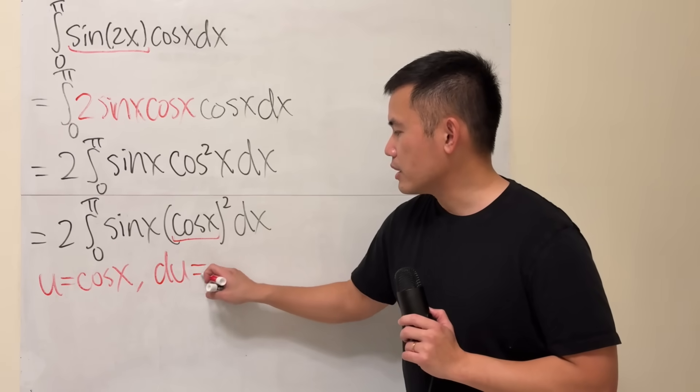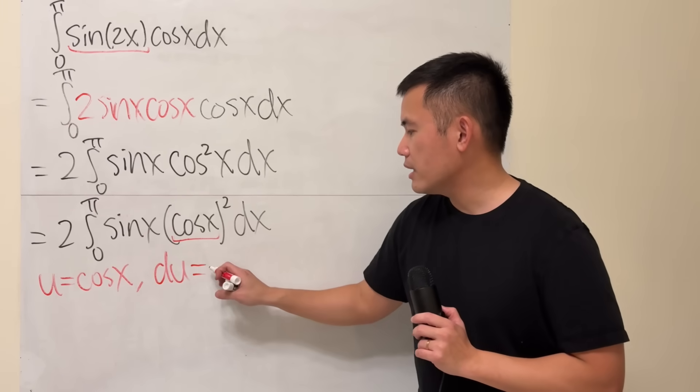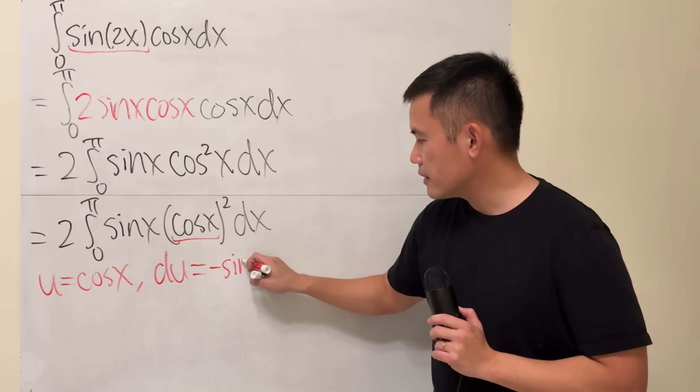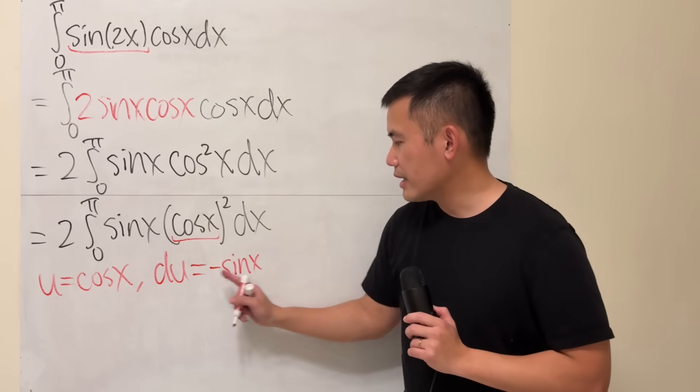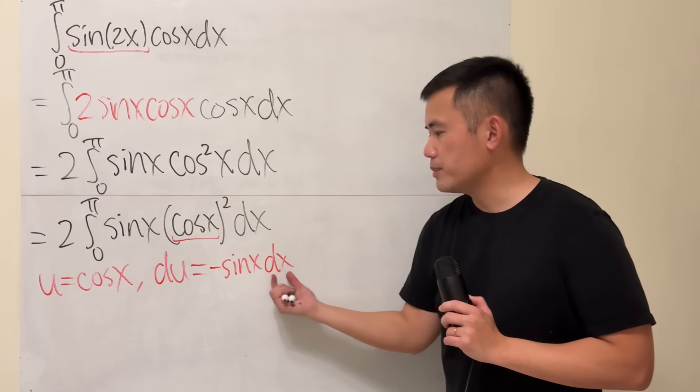But the key is knowing the derivative of cosine x. Remember that is negative sine x. Put the du on the left hand side, and then on the right hand side attach the dx. It's always going to be like that.